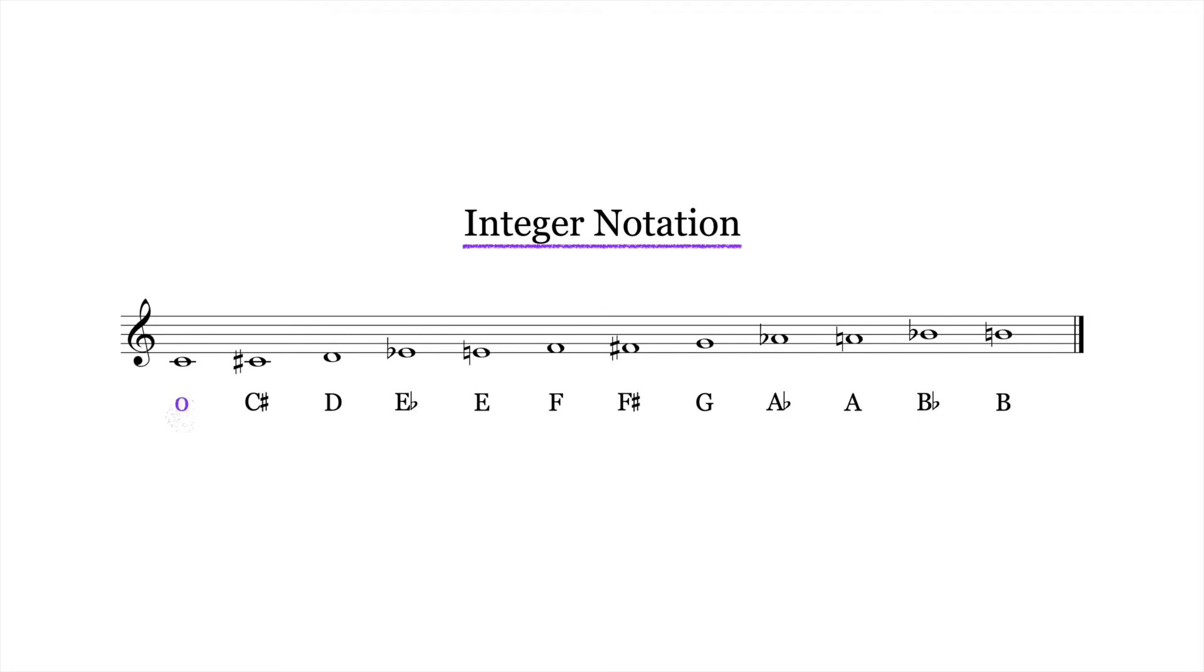C is represented by zero, C-sharp and D-flat are represented by one, D is represented by two, and so on.